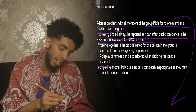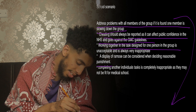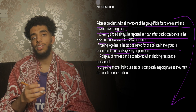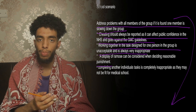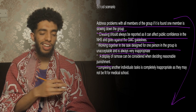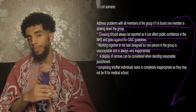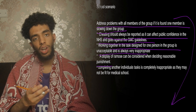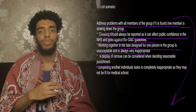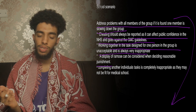The third point is that working together on a task assigned to one individual in the group is unacceptable and always very inappropriate. The reasoning is the same as the prior point — it could result in an unfit doctor who hasn't put in the effort. It may seem extreme, but treating 15 to 20 patients means even one life lost is unacceptable — no one wants to lose that one life.